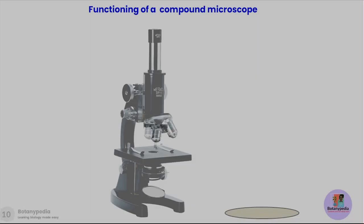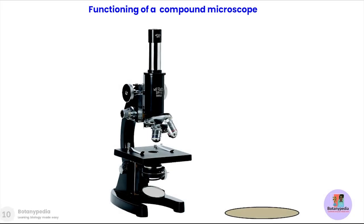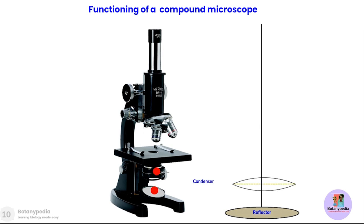To understand the functioning of a compound light microscope we will now draw a ray diagram. This is a picture of a light microscope on the left hand side and we will draw the ray diagram on the right hand side. The first oval shape represents the reflector, and this is the line through which the light ray will pass. The condenser is a convex lens, so light rays coming from the reflector undergo refraction and are focused as they pass through the specimen.